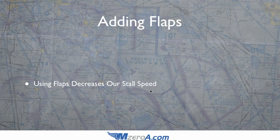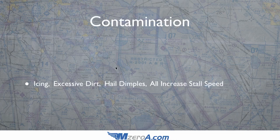Let's look at one more: contamination. Things like icing, excessive dirt, and hail dimples — have you ever seen an airplane hit by hail? — can all increase stall speed. Icing is really the big one here. Excessive dirt is possible, but it would have to be a really, really dirty airplane to play a factor. A few love bugs aren't going to affect it too much, though it's a good incentive to clean your airplane. Contamination increases your stall speed because you're ruining that smooth airflow over and underneath your wing coming off the leading edge.